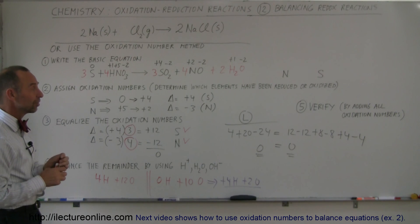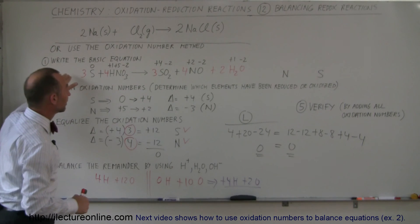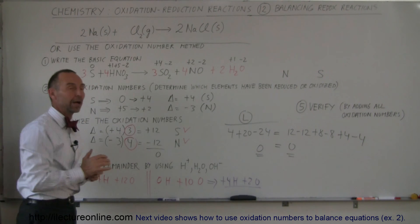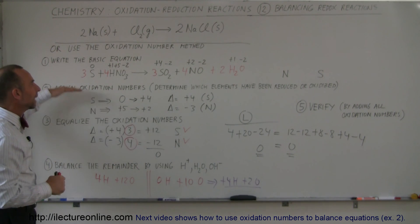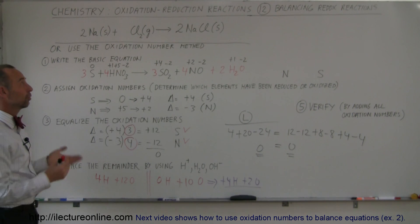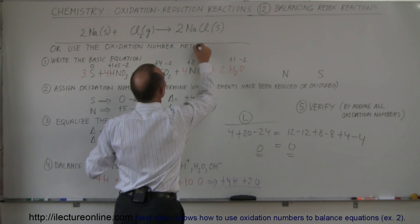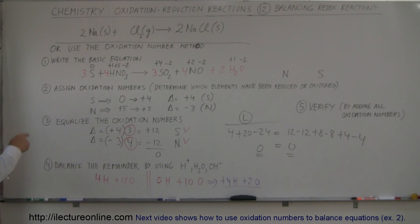That's how we use oxidation numbers to balance equations, especially for something this complicated. Notice that we would not have known to add water unless we used this method, which we call the oxidation number method of balancing equations. Stay tuned — I'll show you several more examples of how to use the oxidation number method to balance equations.